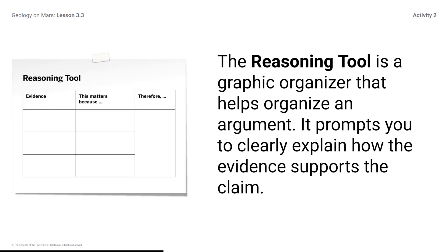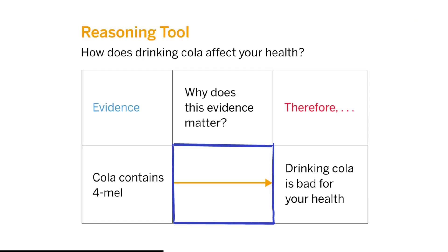The reasoning tool is a graphic organizer that helps organize an argument. It prompts you to clearly explain how the evidence supports the claim. How does drinking cola affect your health? Cola contains formel. Why does this evidence matter? Therefore, drinking cola is bad for your health.